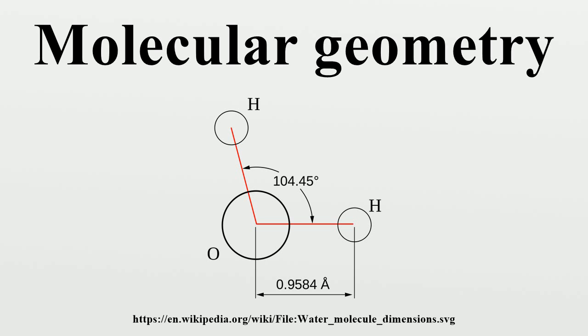Tetra signifies four, and hedral relates to a face of a solid. So, tetrahedral literally means having four faces. This shape is found when there are four bonds all on one central atom, with no extra unshared electron pairs. In accordance with the VSEPR, the bond angles between the electron bonds are arc-cos equals 109.47 degrees. For example, methane is a tetrahedral molecule.